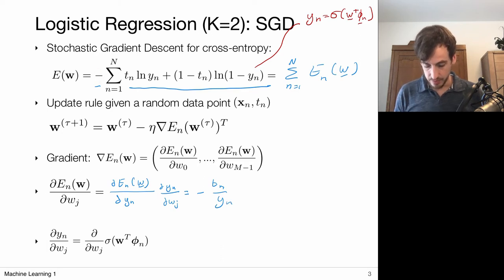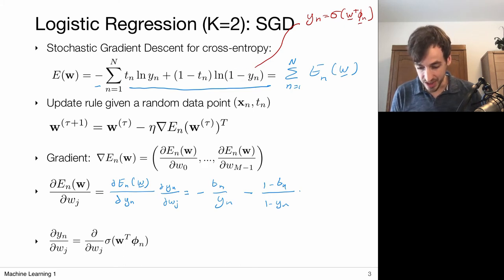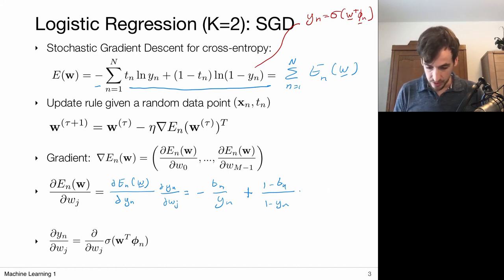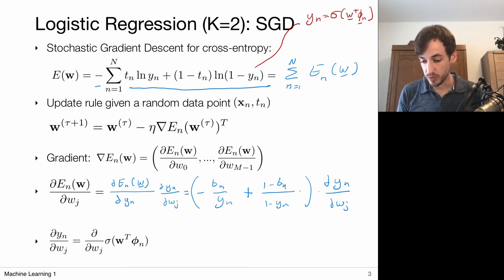We had a minus sign, and this minus also applies for the second term: 1 minus t_n over the derivative of this log, which is 1 over y_n times the derivative of the thing inside the log with respect to y_n — that's minus 1 — so times minus 1. This minus 1 cancels with the outer minus, turning it into a plus. So this entire expression, still times y_n, times the derivative of y_n with respect to w_j. I've now computed this part of my gradient, and I still need the derivative of y_n — my logistic sigmoid model — with respect to w_j.